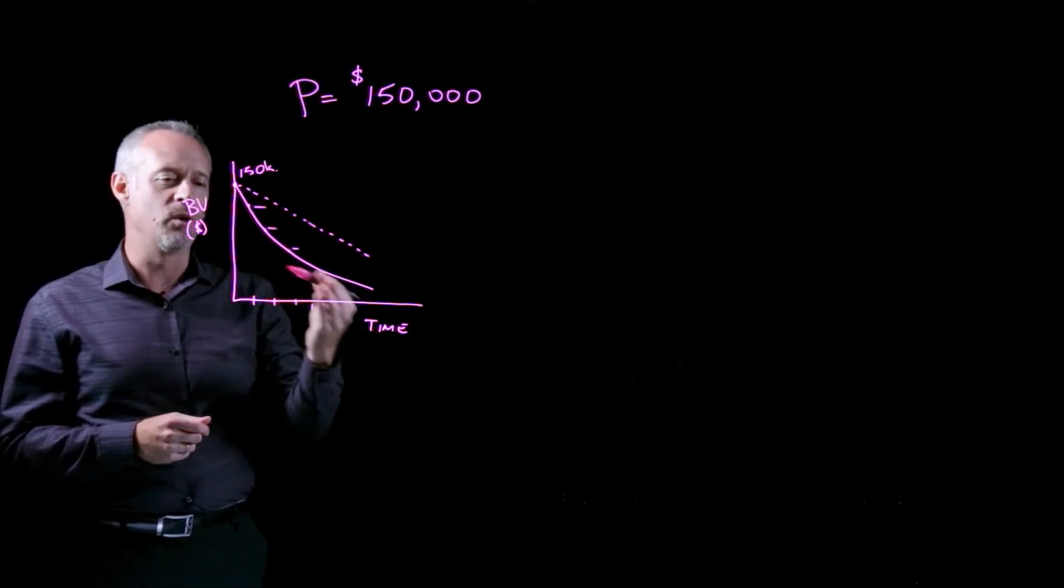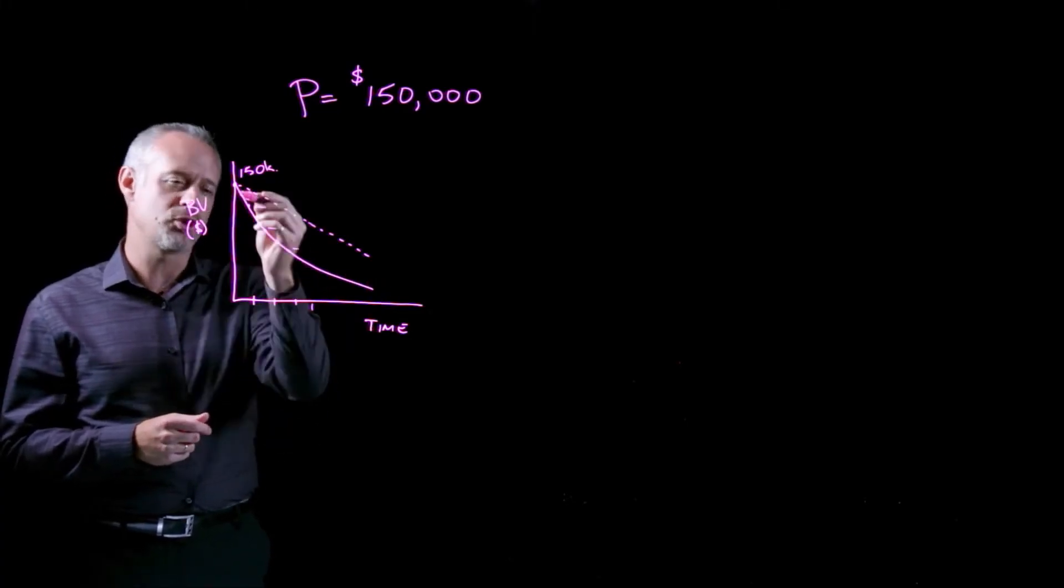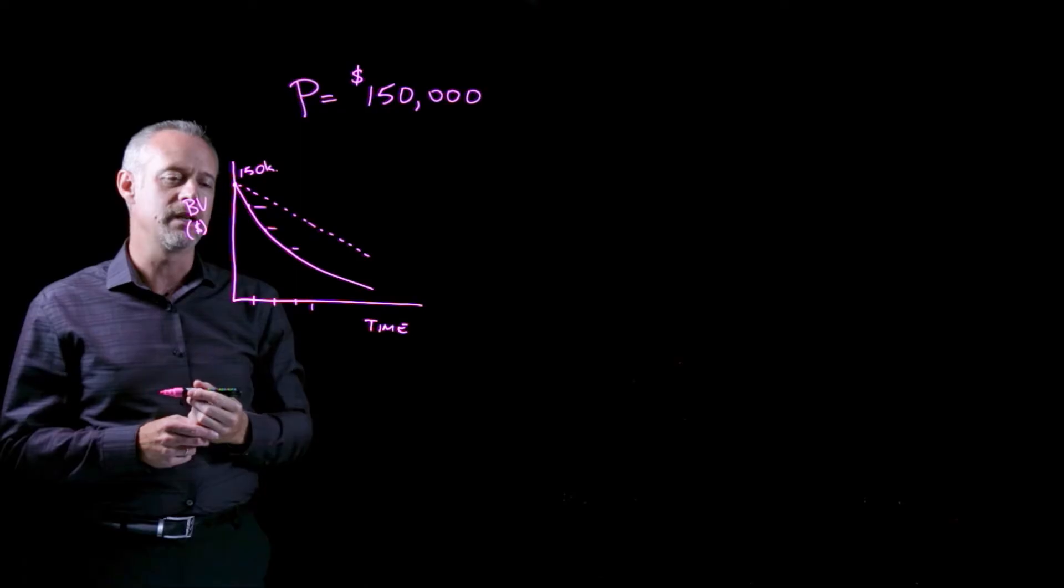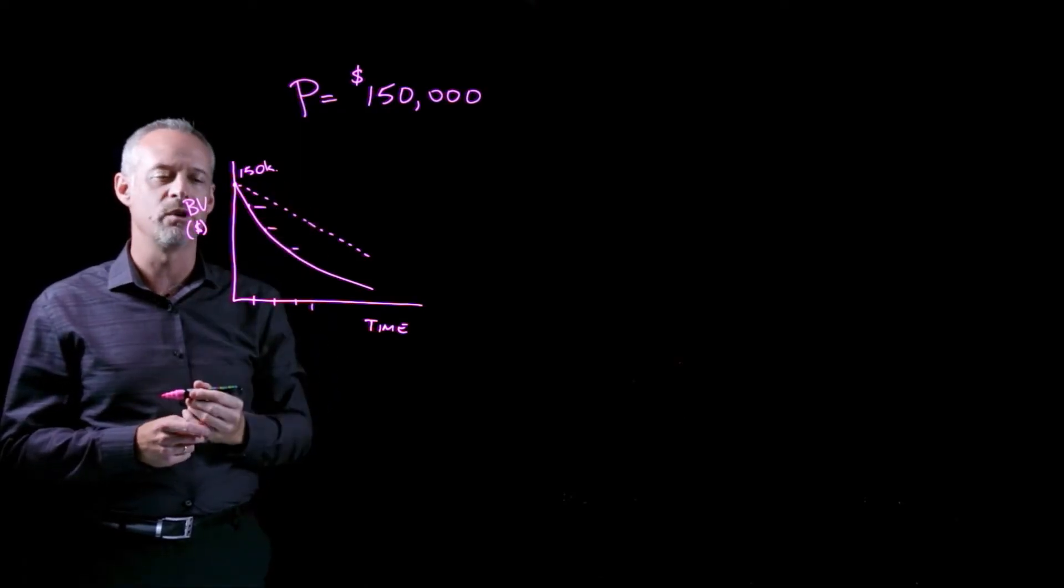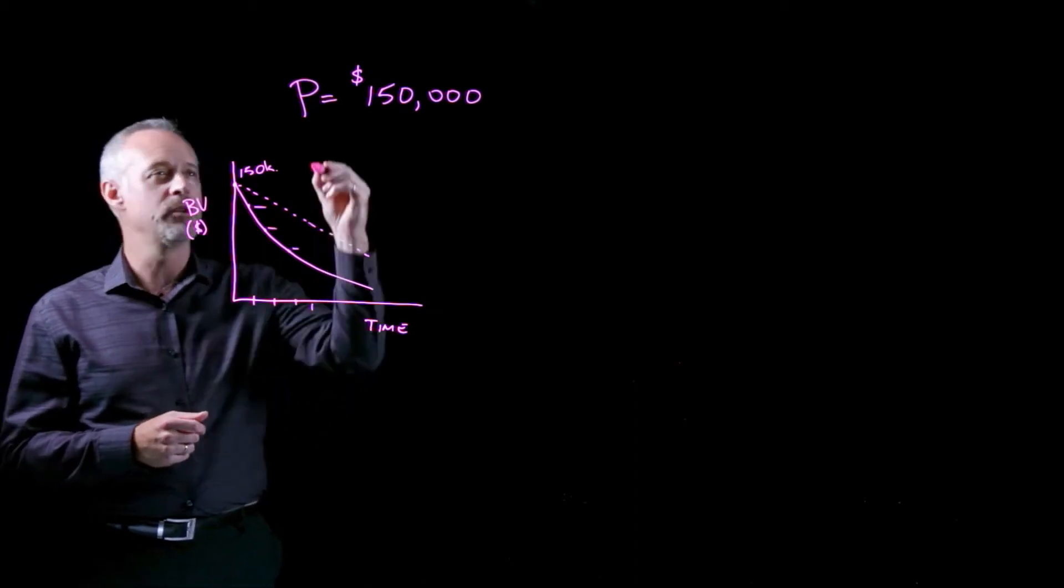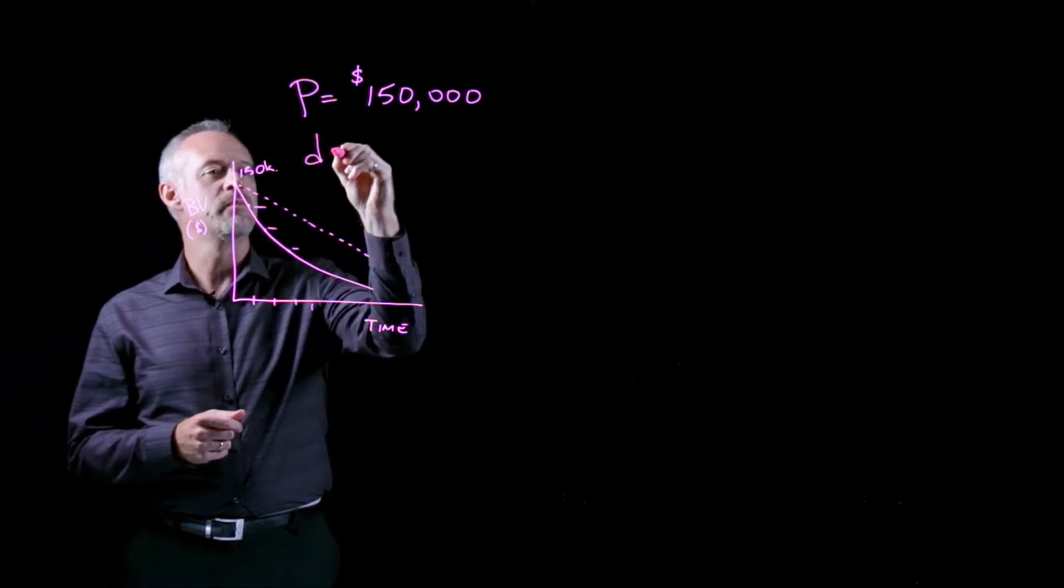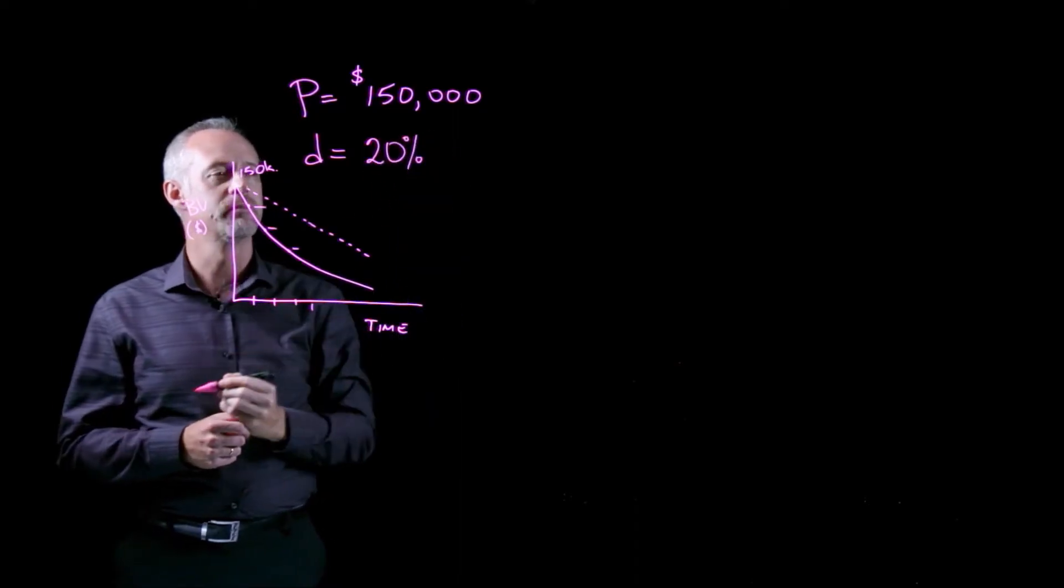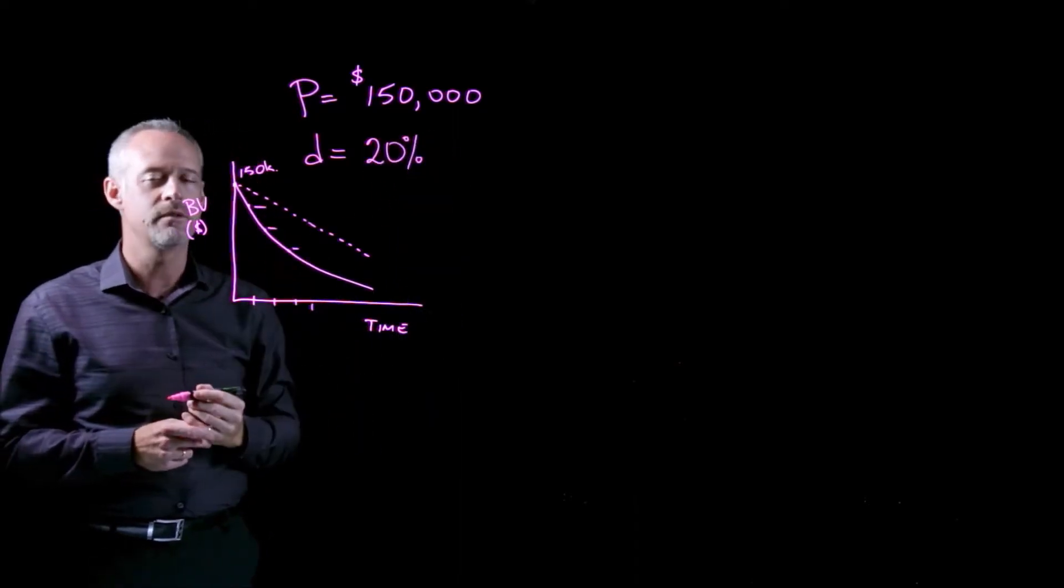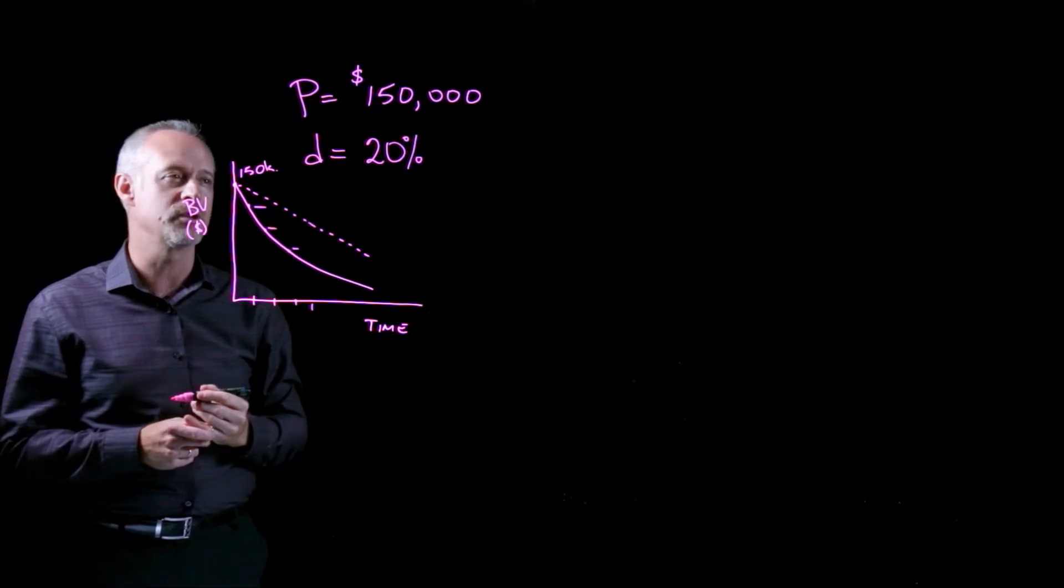So all we need to know to define the shape of this line is really the rate. So by what percentage does the book value decline each year? And we're told in the problem that the depreciation rate is 20%. And we use little d to denote our depreciation rate.